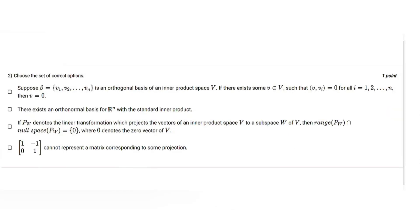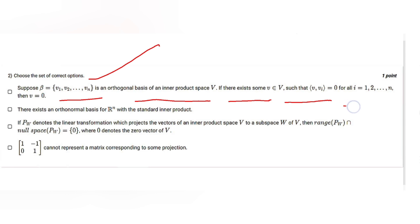Now we have question number two: choose the set of correct options. Option A: suppose β = {v1, v2, ..., vn} is an orthogonal basis of an inner product space V. If there exists some v in V such that the inner product of v and vi equals 0 for all i = 1, 2, ..., n, then v = 0. Option B: there exists an orthonormal basis for R^n with the standard inner product.